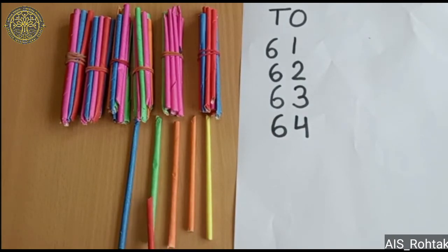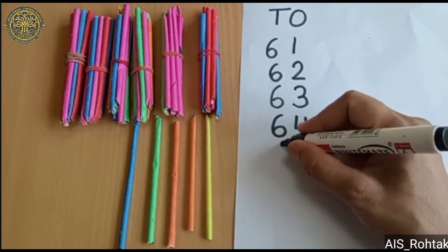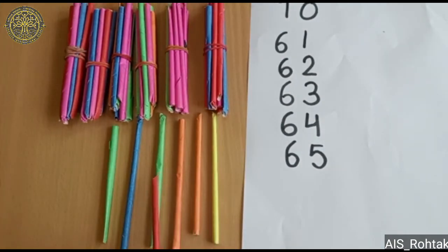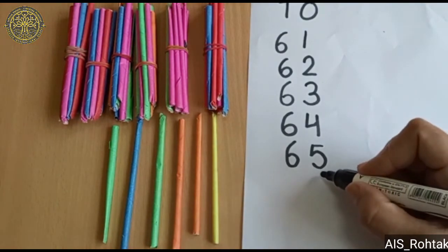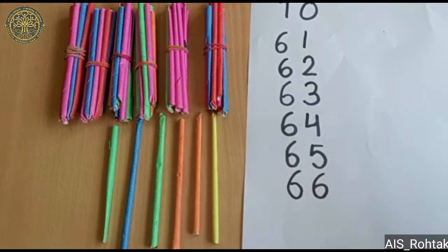1, 2, 3, 4, 5, 5 ones. I can write 5 ones, 6 tens. 65. 1, 2, 3, 4, 5, 6, 6 ones. I can write 6 ones and 6 tens. 66.